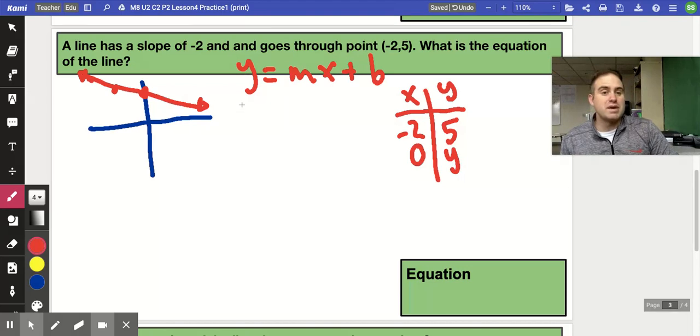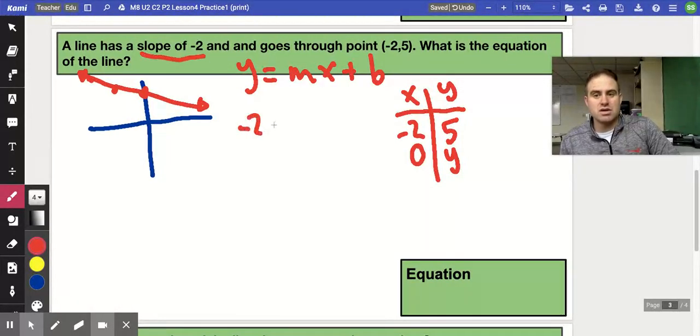We've defined slope repeatedly to be change in y divided by change in x. So since we have a slope of negative 2, we can say that negative 2 equals change in y divided by change in x because we know that's our slope.